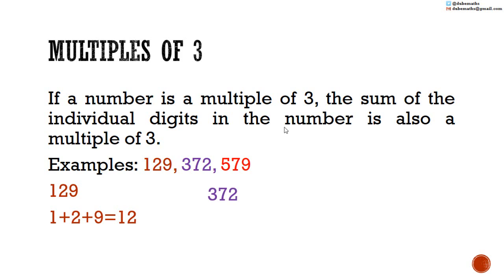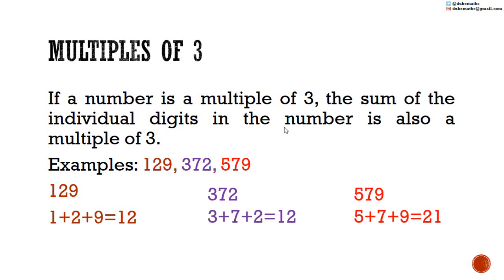For 372, 3 plus 7 plus 2 is equal to 12, so 372 is a multiple of 3. And 579 is also a multiple of 3, because the sum of its individual digits is 21, and 21 is a multiple of 3.